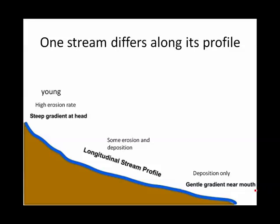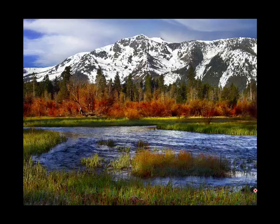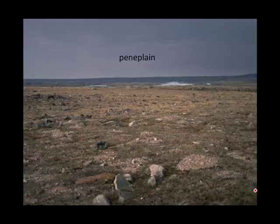We can call the steep headwaters young, the middle mature, and the mouth old. However, one river, given enough time, can go through all these processes. So a mountain river can wear away the mountain until it exists no longer and the entire landscape is flat. This peneplain is the result of so much river erosion that there's almost no gradient left at all, and all rivers draining it would be old.